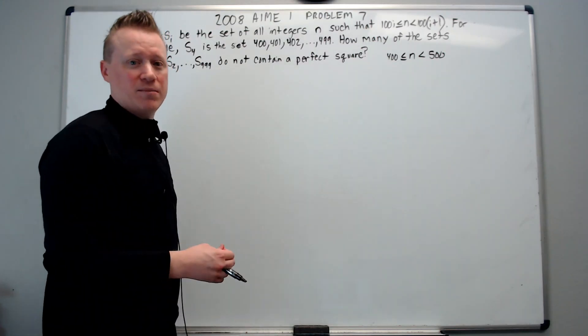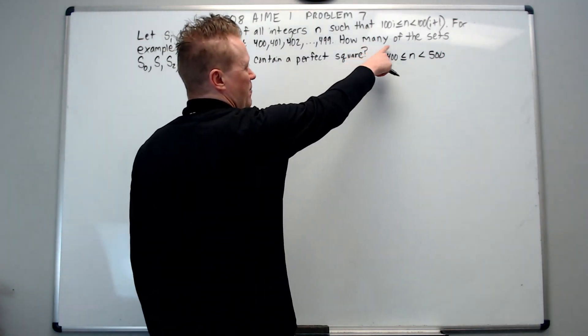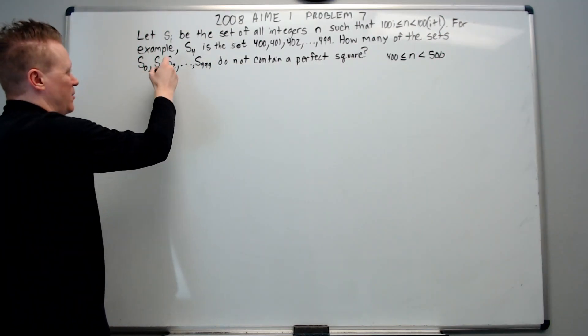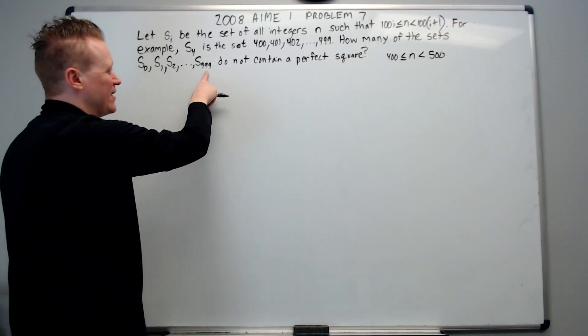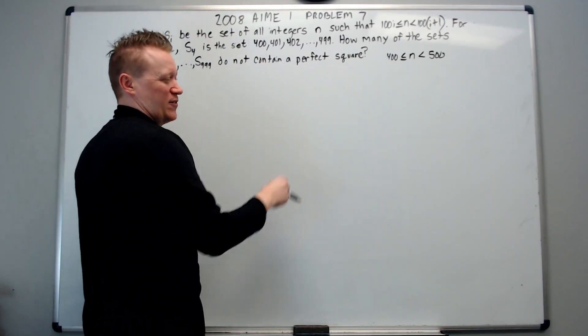It doesn't do any good to read all the way to the end if you don't have any idea what you read. That's just my opinion. Some people will say read the whole problem first. So, how many of the sets s sub 0, s sub 1, s sub 2, all the way to s sub 999 do not contain a perfect square?